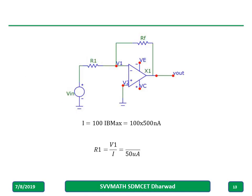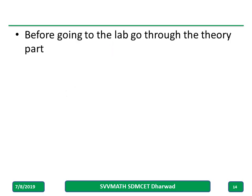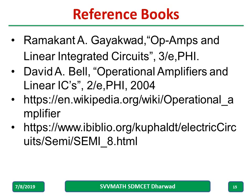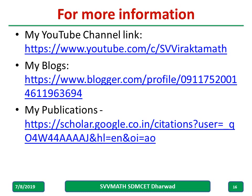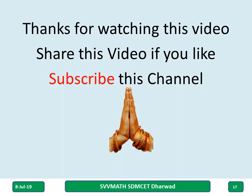When the lab experiment is over, get a signature on your observation book without fail. Do not move instruments from one table to another. To choose the R1 value, the maximum IB from the 741 is 500 nano-amperes, so R1 equals V1 divided by I. Before going to the lab, go through the theory and know what you are going to do, why you are doing it, and what you are supposed to observe. Thank you — please share this with your classmates and friends.